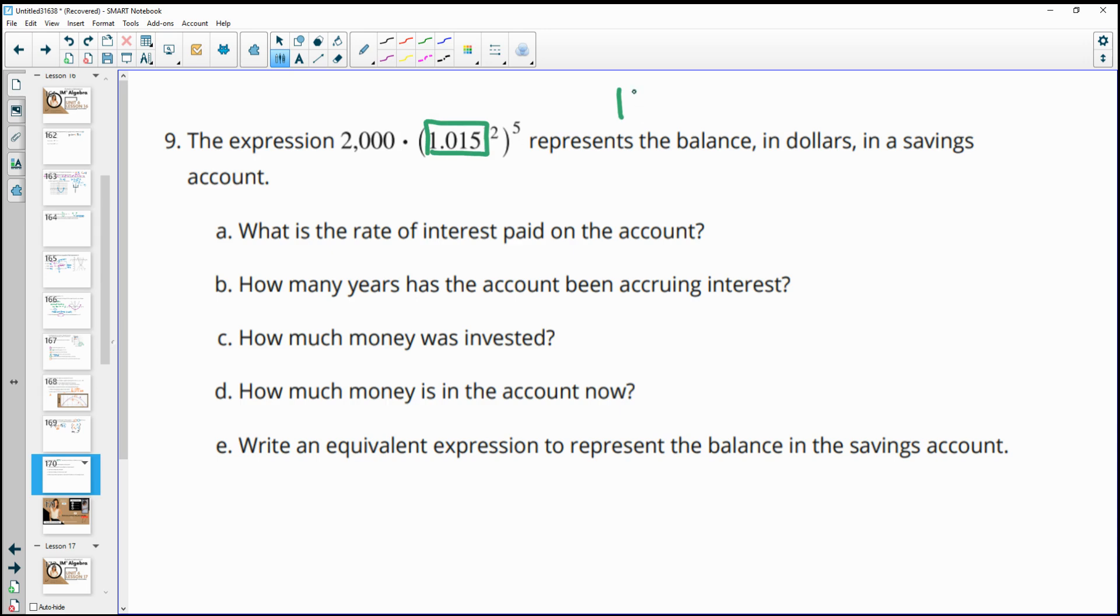or sorry, yeah, by 100, we get 101.5%. And then you need to subtract off the original 100% to figure out what the interest rate is. So 101.5 minus 100 is 1.5%. So 1.5% is our interest rate.